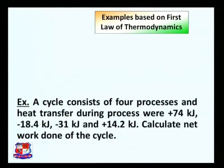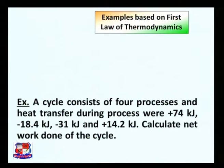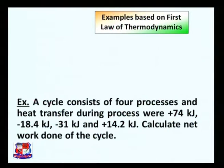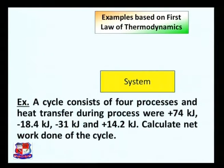Now, the first example based on the first law of thermodynamics. The data is given as follows: a cycle consists of four processes, and the heat transfer during each process is +74 kJ, -18.4 kJ, -31 kJ, and +14.2 kJ. We need to calculate the net work done on the cycle.